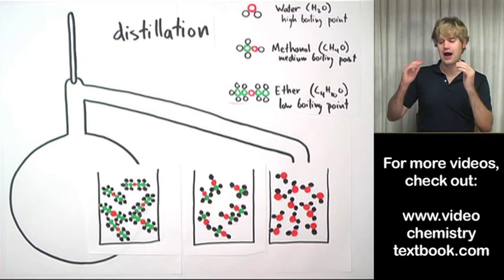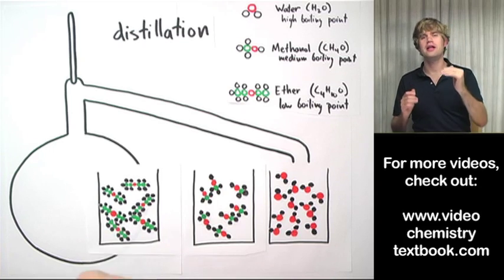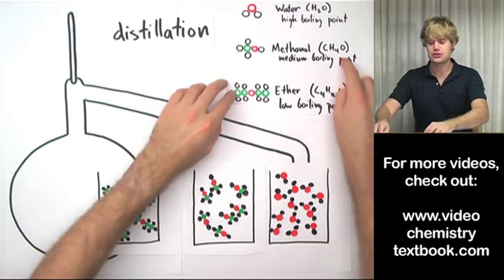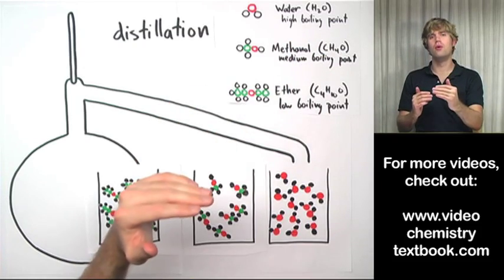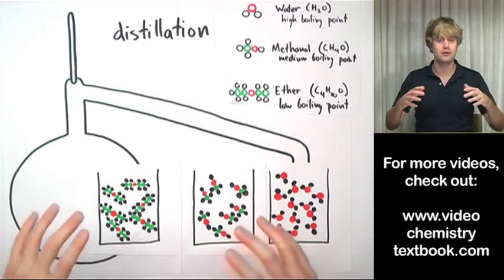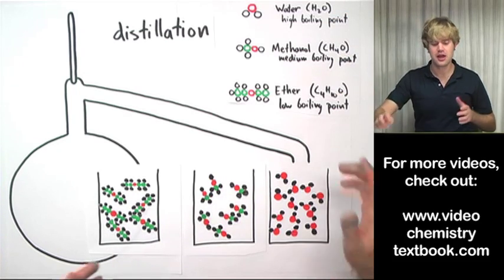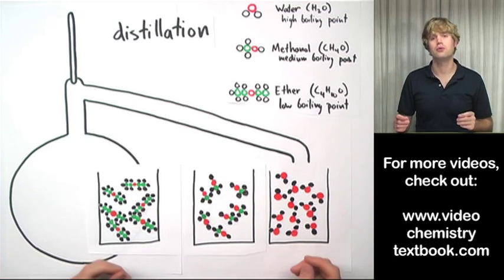And just once again to review, I've used the fact that they all boil at different temperatures in order to do this. So at a certain temperature, one of them will boil, but the others will not. They'll stay liquid. And that's how we're able to separate out these different liquids if they have different boiling points.